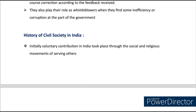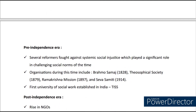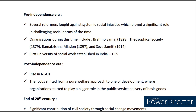Now let's look at the history of civil society in India. Initially, voluntary contribution in India took place through social and religious movements of serving others. In the pre-independence era, several reformers fought against systemic social injustice, playing a significant role in challenging social norms of the time. Some organizations during that era include Brahmo Samaj, Theosophical Society, Ramakrishna Mission and Seva Samiti. The first university of social work established in India during the pre-independence era was the Tata Institute of Social Sciences.